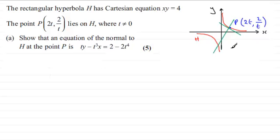So, to get the equation of the normal, I'm going to look at the form y minus y1 equals m bracket x minus x1. We've got x1, we've got y1. I'm going to take x1 as 2t, y1 as 2 over t. We just need the gradient m. And to get the gradient m, we differentiate the curve to get the gradient of the tangent, and then we use the perpendicular rule to get the gradient of the normal. So that's the method.